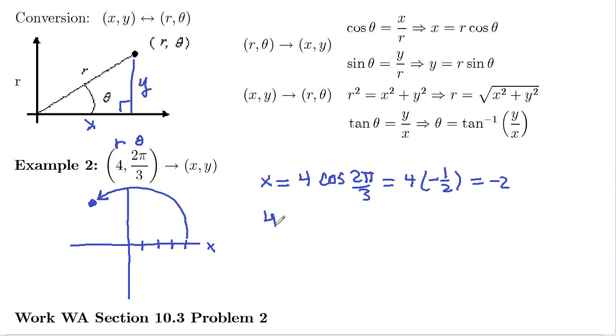And then the y-coordinate is going to be 4 times sine 2π over 3. And sine 2π over 3 is root 3 over 2. So 4 times root 3 over 2. 2 cancels in here, we get 2 root 3.